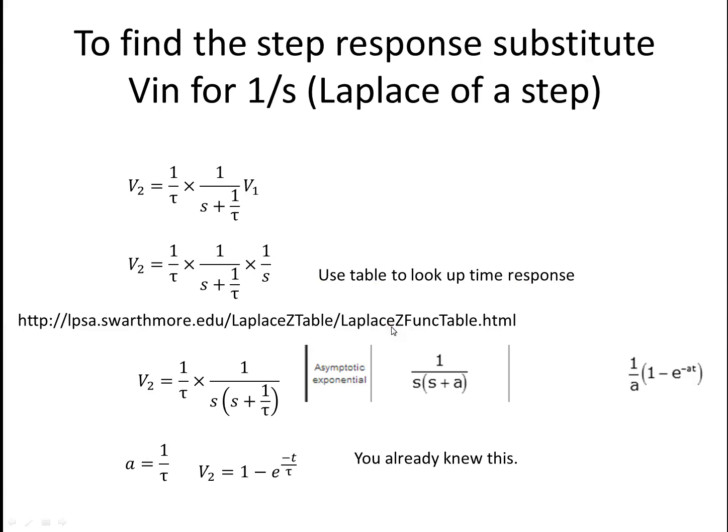Here's one that you can use, but even in the book it should be there. Although this particular transform might not be so readily available. But all we have to do is let A equal 1/τ. We just look it up and substitute and V2 equals 1 minus e^(-t/τ). But the thing is, you've done these problems before and you already knew this.